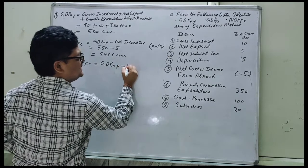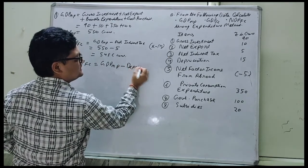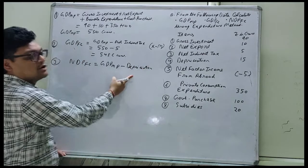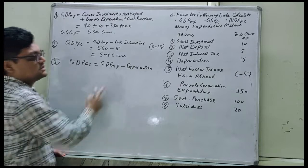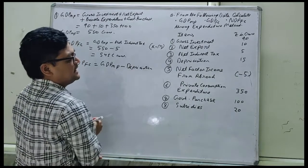Less depreciation, because it is market price, we have to go to factor cost. GDP MP less depreciation, less net indirect tax.